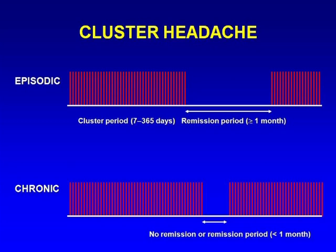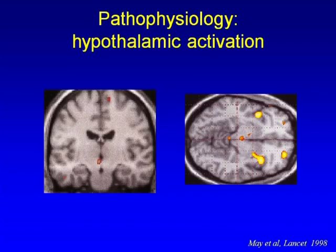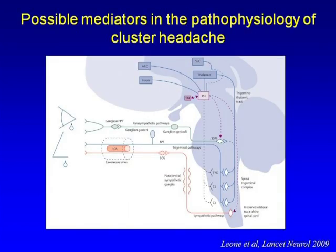PET studies have shown several brain areas activated during cluster headache attacks, but the most consistently activated area across all studies is the posterior hypothalamus. Complex parasympathetic, sympathetic, and trigeminal pathways are involved along with brainstem structures. Unfortunately, this headache is not very well studied because pharmaceutical companies have little interest in developing drugs for a condition affecting less than 1% of the population.